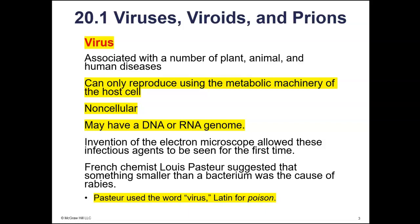A virus is actually similar to a living thing, but is not considered a true living thing. For one thing, it can only reproduce using a host cell. It must invade a host cell and then take advantage of the host cell's metabolic machinery — the enzymes and other components necessary for replication, transcription, and translation, all of which are found in the host cell. The virus basically tricks the host cell into making new viruses.